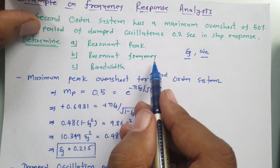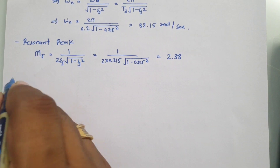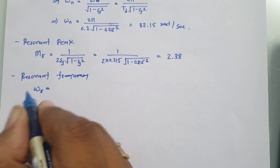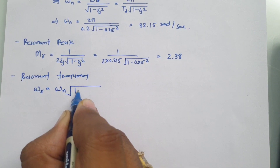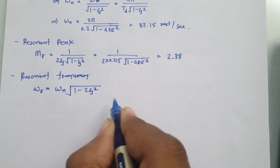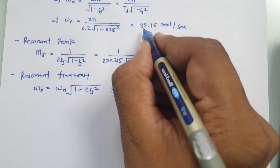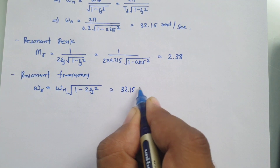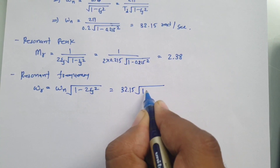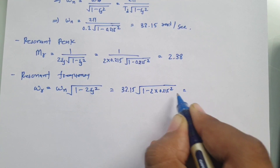The second parameter is the resonant frequency. The resonant frequency is given by ωr = ωn × √(1 − 2ζ²). Substituting the known values: ωn = 32.15 and ζ = 0.215. Let us solve this in the calculator.